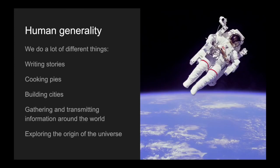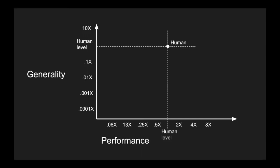Human level generality is the set of all the tasks that humans can do and have undertaken. These include things like writing stories, cooking pies, building cities, gathering and transmitting information all around the world, and even exploring the origin of the universe. It's a very broad set of activities. We can represent human level generality on the y-axis. Roughly, this is the set of all tasks that a human or group of humans can do. We'll make the y-axis logarithmic as well. So an equal interval is a factor of 10 in performance, either multiplied or divided, depending on whether you're moving up or down.